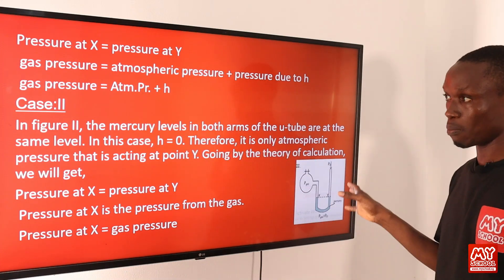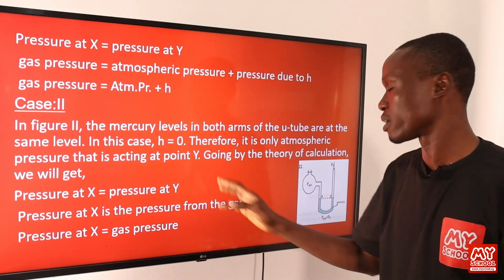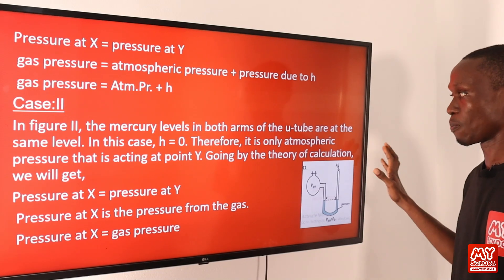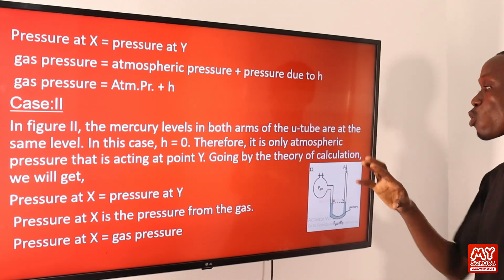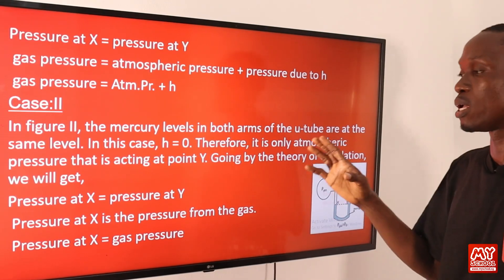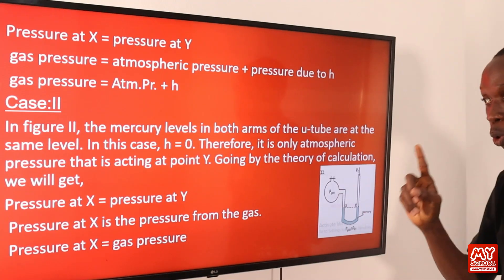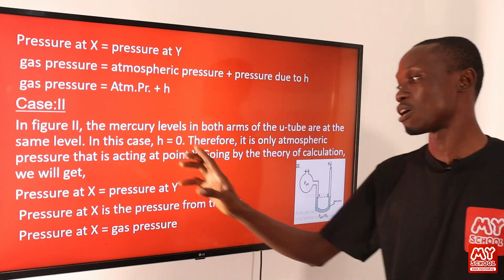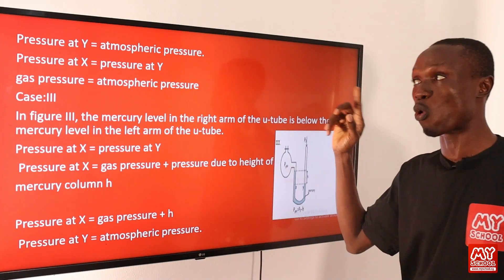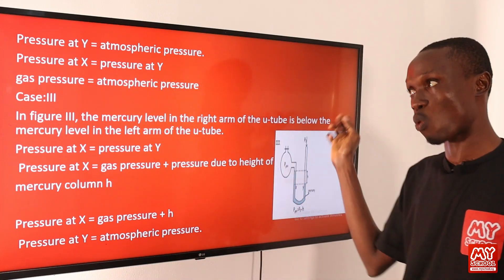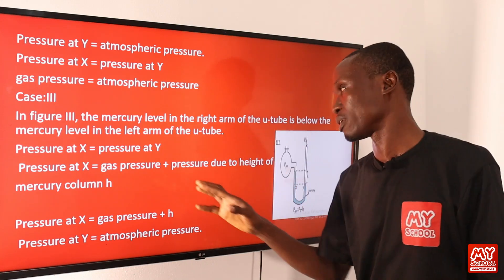Case two: in this figure, the mercury levels in both arms of the U-tube are at the same level. In this case, the height of the mercury column equals zero. The only pressure acting is the atmospheric pressure at point Y. Pressure at S equals pressure at Y. Since pressure at S is due to the gas pressure, gas pressure in case two equals atmospheric pressure only.